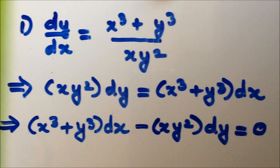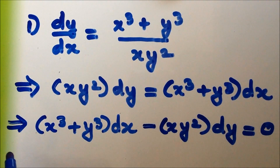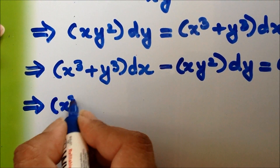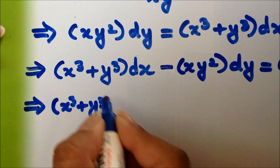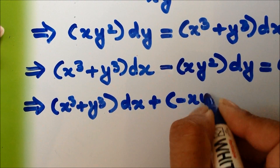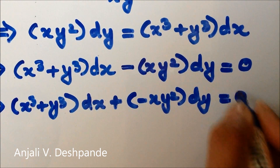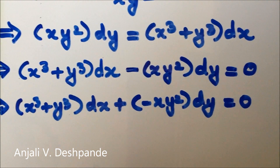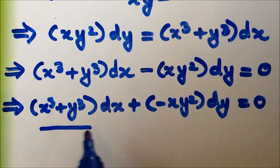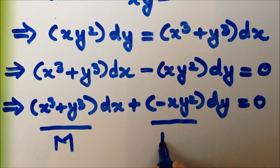We have rearranged and written the equation in the form M dx + N dy = 0. Specifically: (x³ + y³) dx + (−xy²) dy = 0. So M = x³ + y³ and N = −xy².